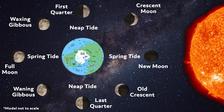Now you can walk outside at night and, based on the shape of the moon, you can tell what's going on in the ocean. Remember, spring tides occur when the Sun, Moon, and Earth are lined up, and this causes regular high tides and low tides to be much higher. Neap tides occur when the Sun, Moon, and Earth form a right angle, and this causes the regular high tides and low tides to become much lower than usual. A neap tide will always come about seven days after a spring tide.